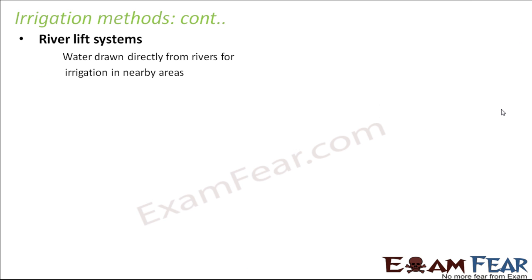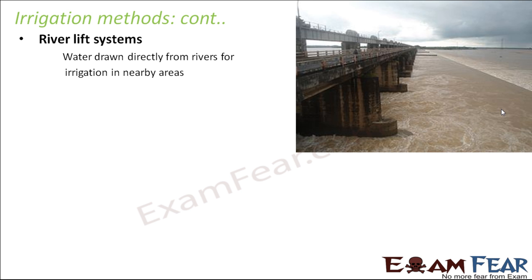Another method could be river lift systems, where water is drawn directly from rivers for irrigation in nearby areas. The concept remains the same — just that the well is replaced by a river. Instead of the well, you have the river, and the water is lifted using pumps fitted within the river lift systems, and then that water is used for watering the nearby fields.